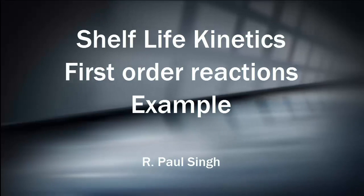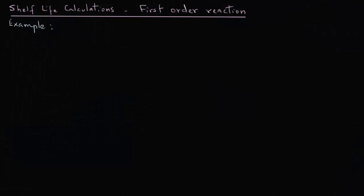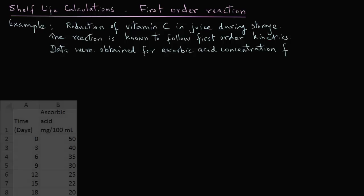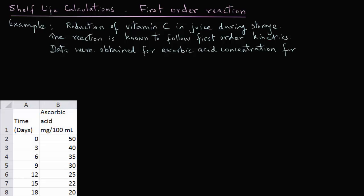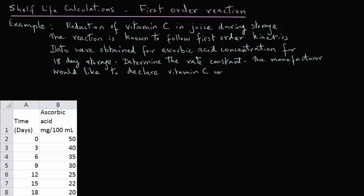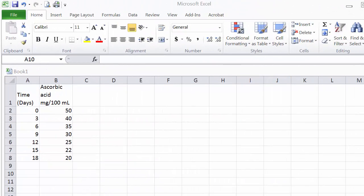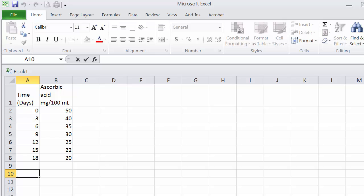Let's work through an example for a reaction that follows first-order kinetics. We have a reduction of vitamin C in juice during storage. The reaction is known to follow first-order kinetics. Data were obtained for ascorbic acid concentration over an 18-day period. We need to determine the rate constant, and also determine for how long the manufacturer's label claim of 15 milligrams per 100 milliliter would be valid from the day of manufacture.